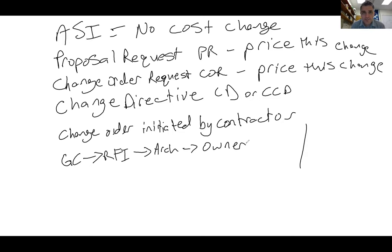Finally the general contractor sends the subcontractor a request for quote on the pricing. The subcontractor emails the supplier to ask how much it would cost to change the bathroom fans. The supplier marks up their price, the subcontractor marks it up for their profit, then sends it to the general contractor who marks it up for their profit, and sends it to the architect. The owner then decides whether to lower the ceilings or change all the fans to lower profile ones.